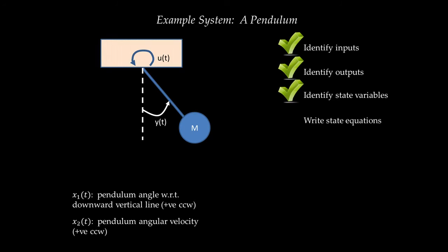Step four is to write the state equations — equations for X1 dot and X2 dot. X1 dot is very easy: the rate of change of pendulum angle is just angular velocity, so X1 dot equals X2. The second state equation for X2 dot — angular acceleration — requires calculating the summation of moments acting on the pendulum using the rotational law of motion: the summation of moments equals angular acceleration multiplied by moment of inertia.